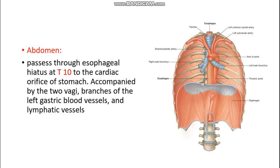The esophagus enters the abdomen through the esophageal hiatus at the level of T10 and joins the cardiac orifice of the stomach. It is accompanied by two vagal branches, left gastric vessels, and lymphatic vessels. The two vagal nerves — the right vagus and left vagus — are parasympathetic cranial nerves that provide parasympathetic supply to the whole gastrointestinal tract. The abdominal portion of the esophagus is about 0.5 inches or 1.25 centimeters long.